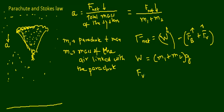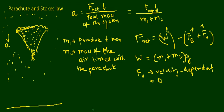Viscous forces are velocity dependent — they increase with velocity and decrease when velocity is low. In this case, when the parachutist is coming down the velocity is relatively less, so for convenience we assume viscous forces are equal to zero, because the parachute causes a slower descent compared to free fall without a parachute.